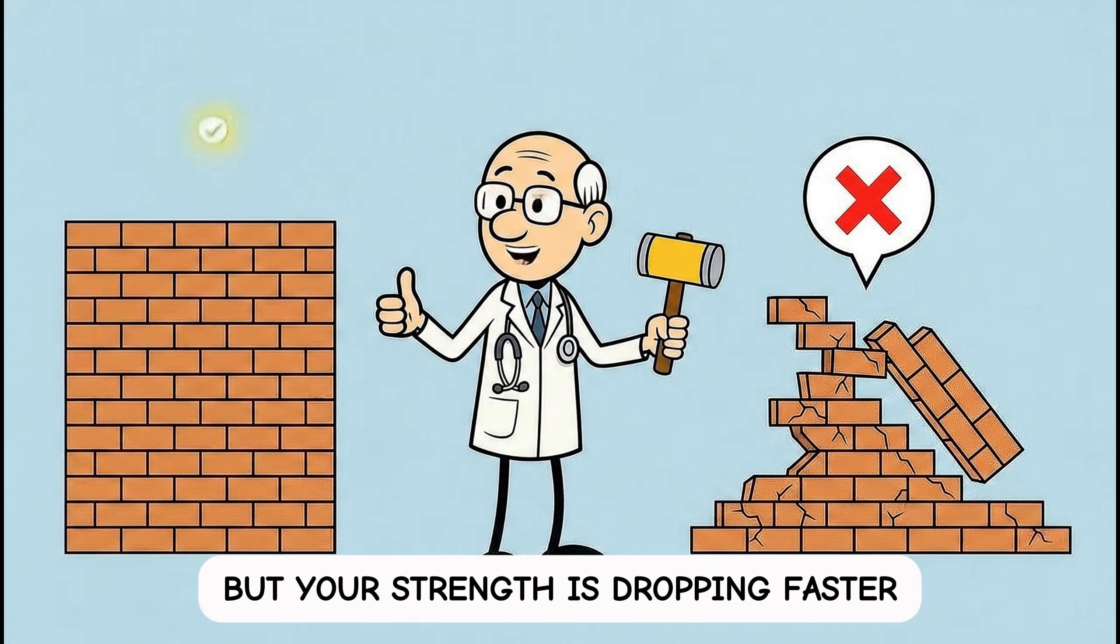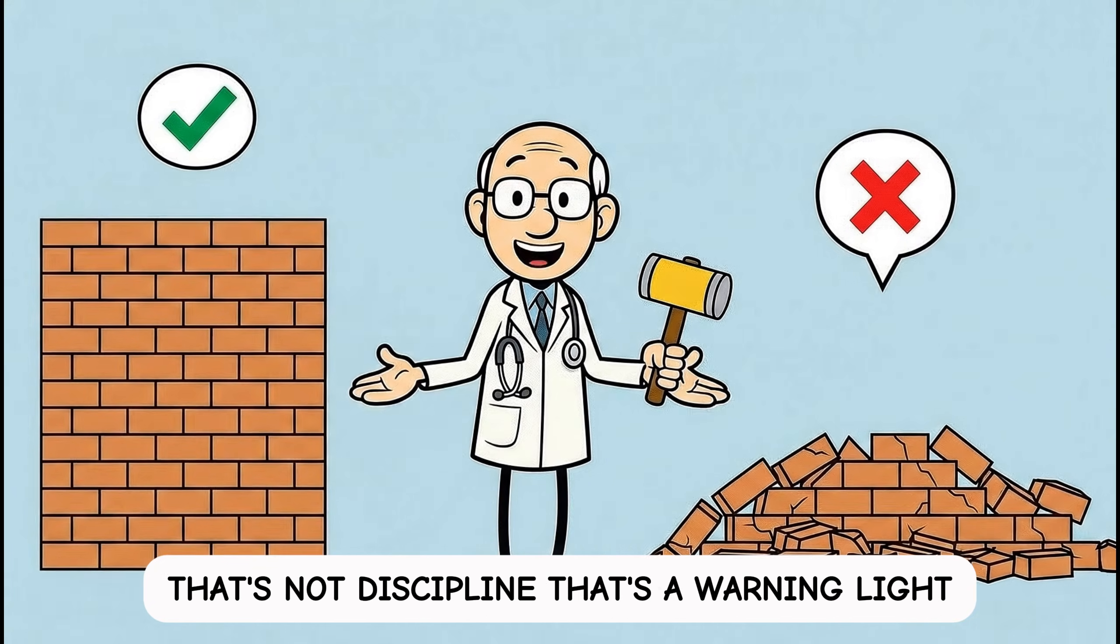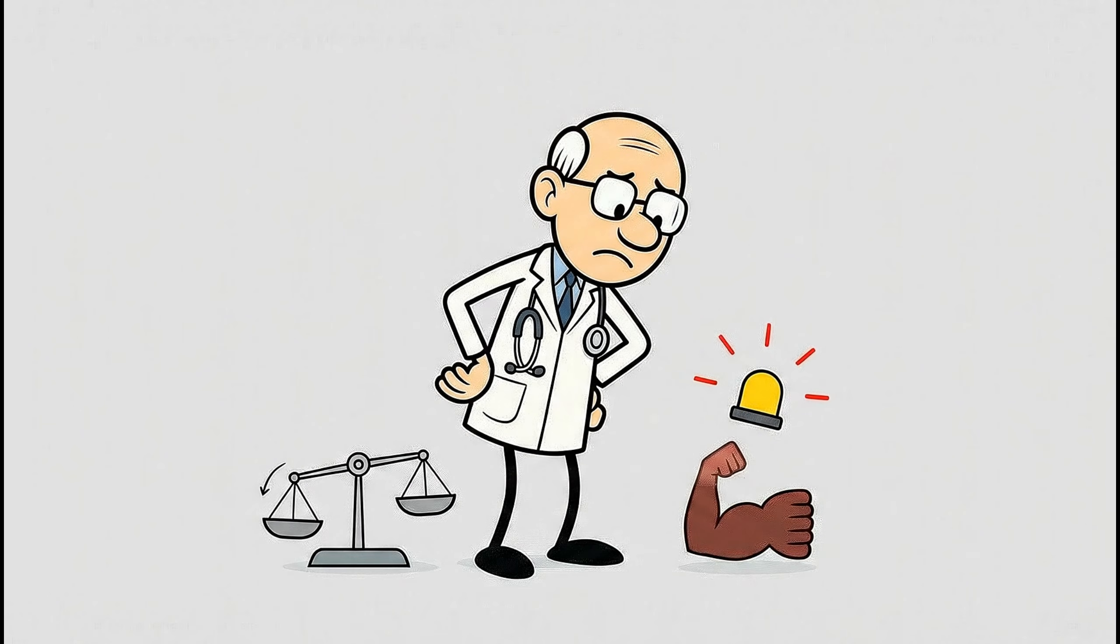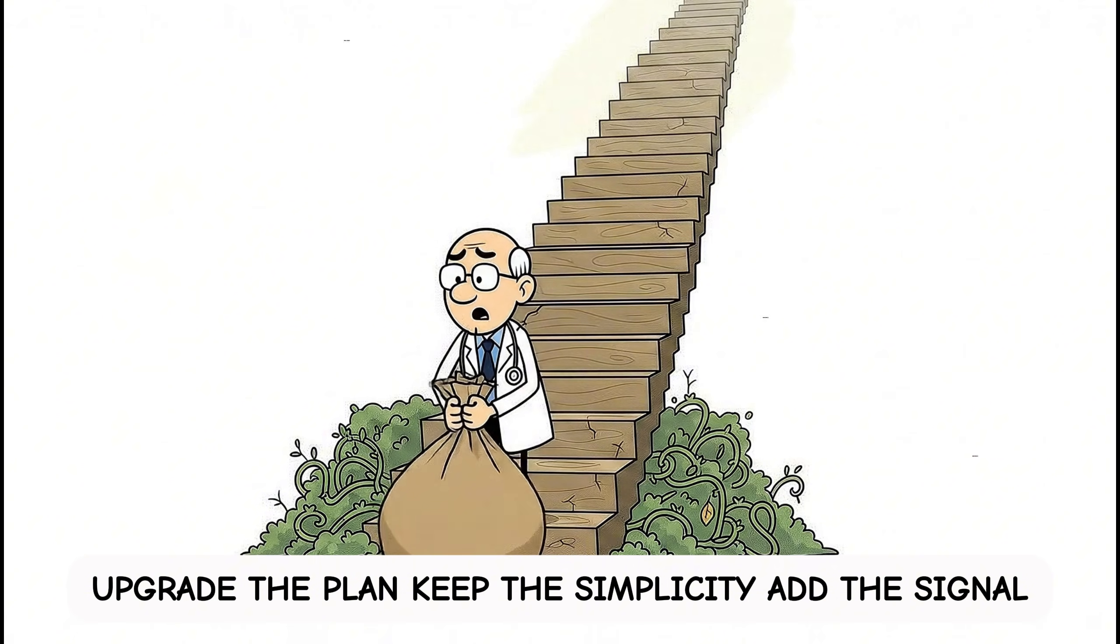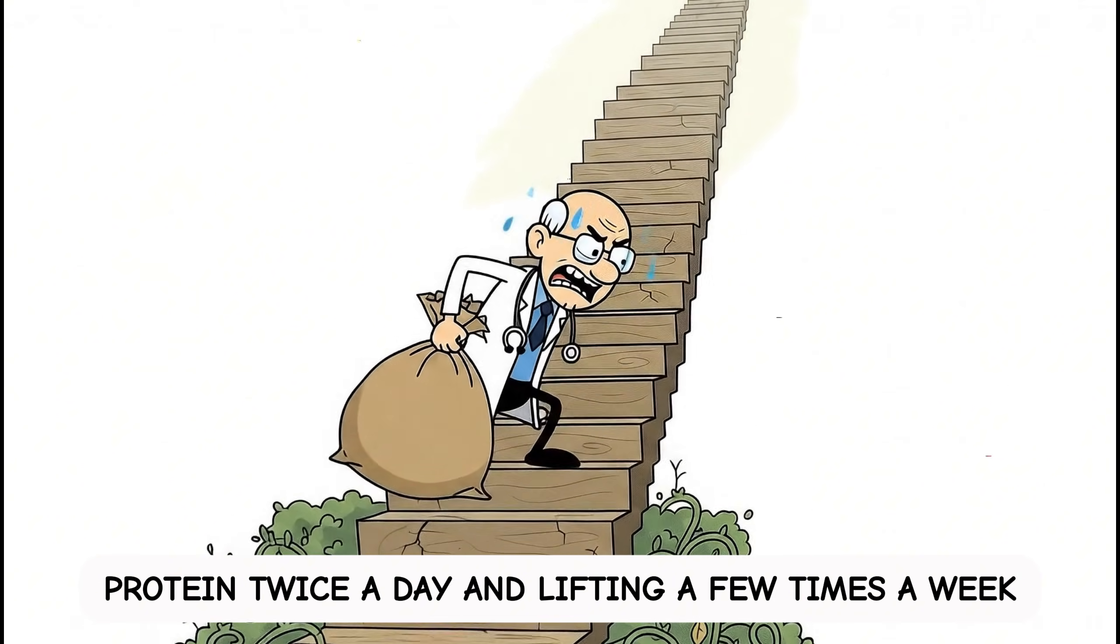If your scale is dropping, but your strength is dropping faster, that's not discipline, that's a warning light. Don't wait until stairs feel steeper and groceries feel heavier. Upgrade the plan, keep the simplicity, add the signal protein twice a day, and lifting a few times a week.